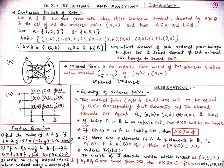And now we will study some observations in Cartesian products of sets. So first observation is equality of ordered pair. So here if two ordered pairs, that is (A,B) and (C,D), they are said to be equal if their corresponding first element and second elements are equal, that is if (A,B) = (C,D) and this implies that A = C and B = D.